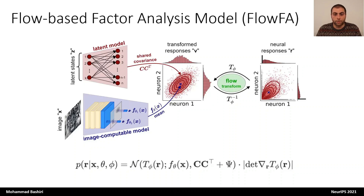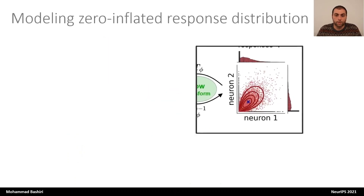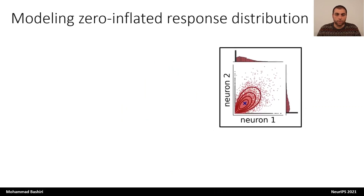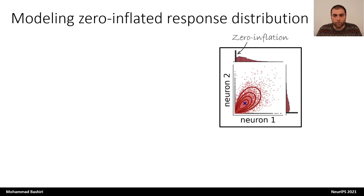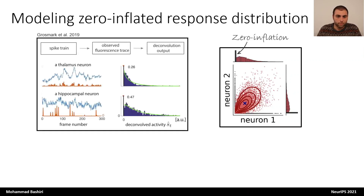There is one additional twist we introduce in our model to account for some characteristics of the calcium response distribution. That characteristic is that responses recorded by two-photon calcium imaging often have a peak at zero, resulting in a zero-inflated distribution. This is a potential problem for the FlowFA model because the model would likely be biased towards this peak and provide a poor fit to the distribution, especially for the positive responses. There has been some recent modeling work that tries to address this by taking a mixture modeling approach.